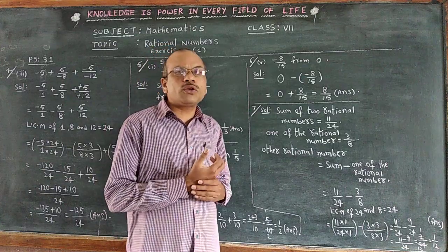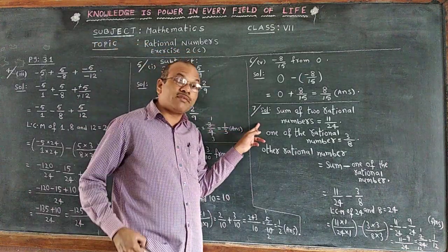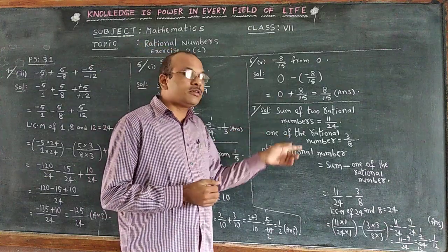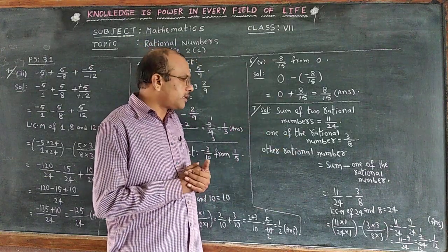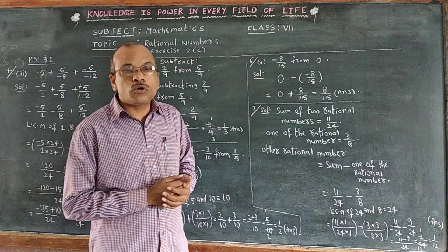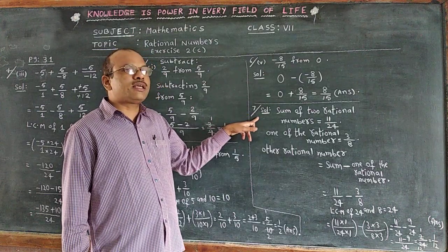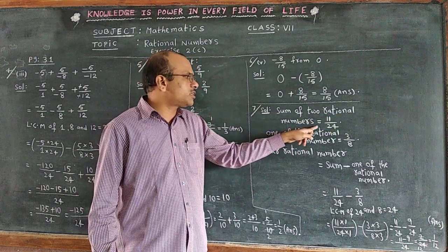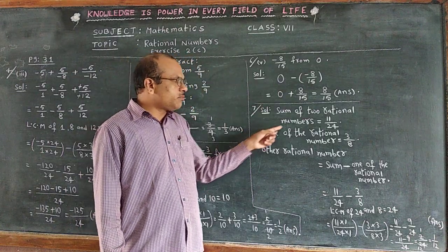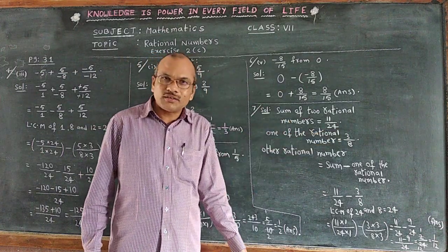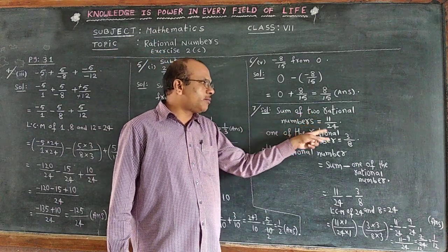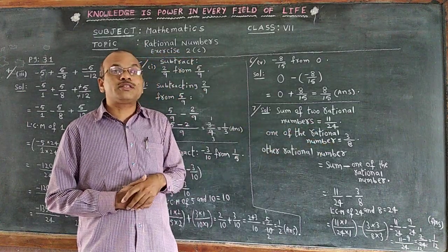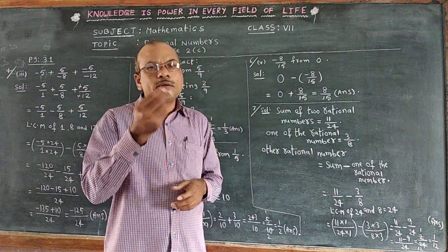Now we go to Question 7, which is a verbal sum requiring a little more thinking. The sum of two rational numbers is given as 11 by 24. One of the rational numbers is 3 by 8. We need to find the other rational number.